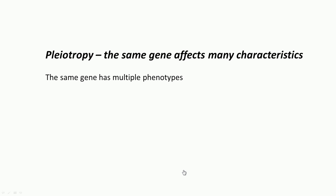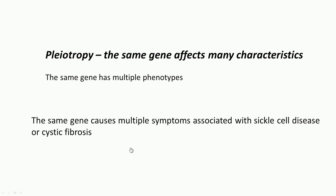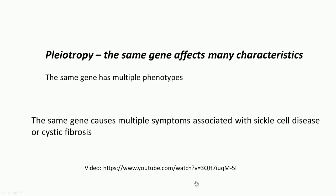Pleiotropy is again non-Mendelian. This means the same gene affects many characters, not just one — it affects multiple phenotypes. For example, the same gene causes symptoms associated with sickle cell disease as well as cystic fibrosis. You can look at the video given here for more details about pleiotropy.